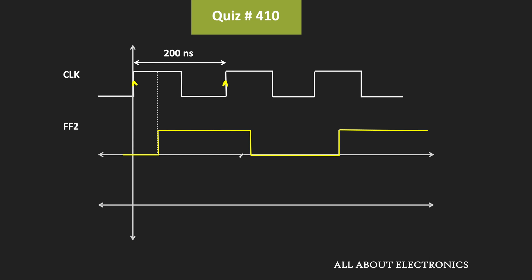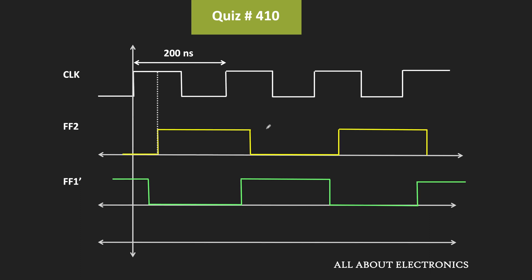Now let us recall the Q' output of the first flip-flop. These two outputs are given to the AND gate, so let us see the output waveform of the AND gate. For our convenience, these two waveforms are extended for a few more cycles. The output of the AND gate will be 1 when both inputs are 1, and 0 when any one of the inputs is 0. We will get the high output when both inputs are logic 1. As you can see, for that duration both inputs are logic 1, so we will get the high pulse. Similarly, for this duration both inputs are high, and therefore we will once again get the high pulse at the output of the AND gate.